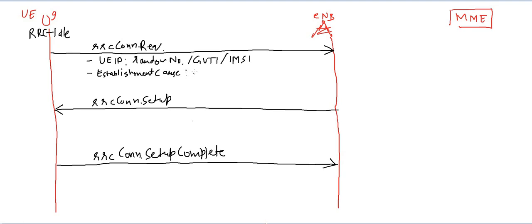The second IE in the RRC Connection Request is the Establishment Cause. This establishment cause could be MO signaling, MT access, or MO data.